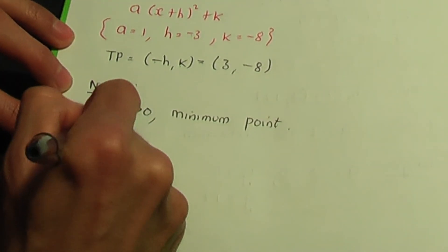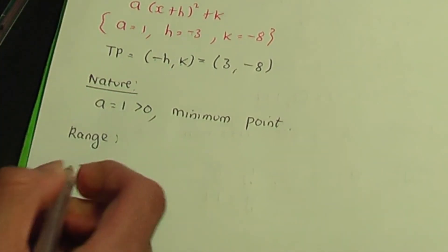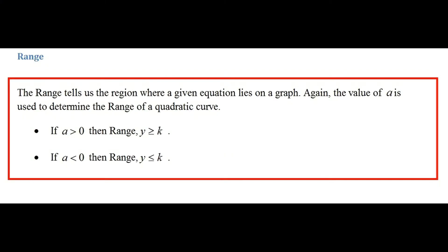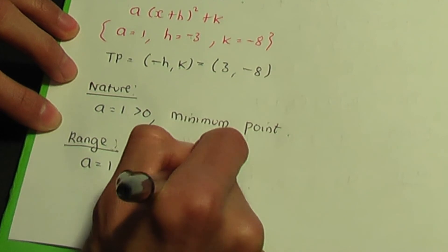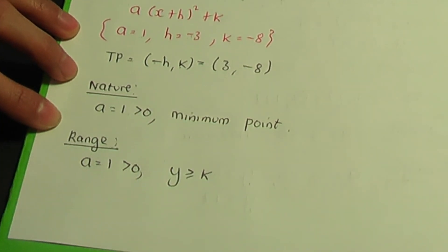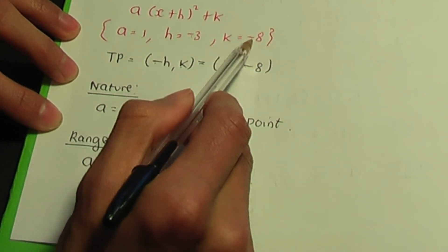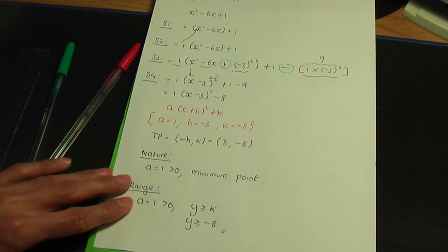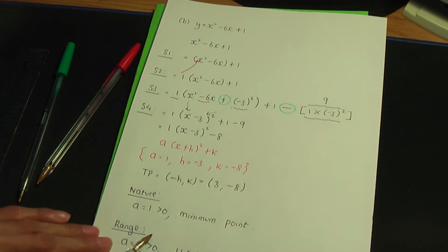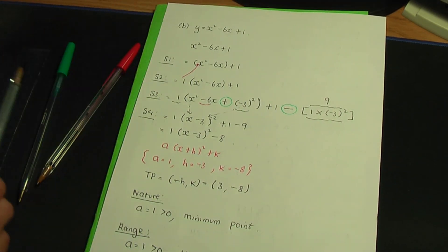To complete this example, let's state the range. Our a value is 1, and 1 is greater than 0, so the range is y greater than or equal to k. Our k value from completing the square is minus 8, so the range is y greater than or equal to minus 8. That completes part b.